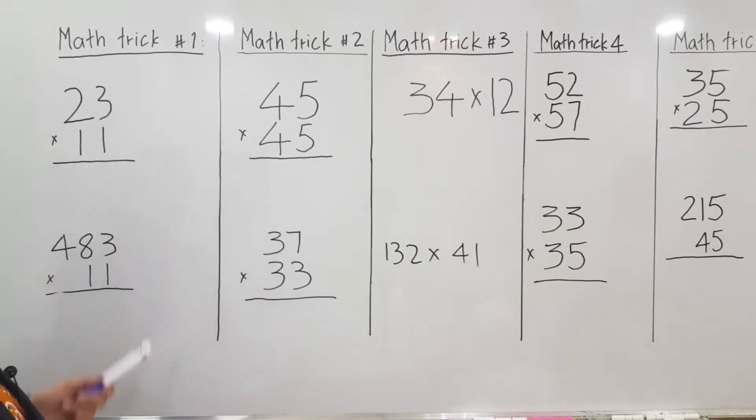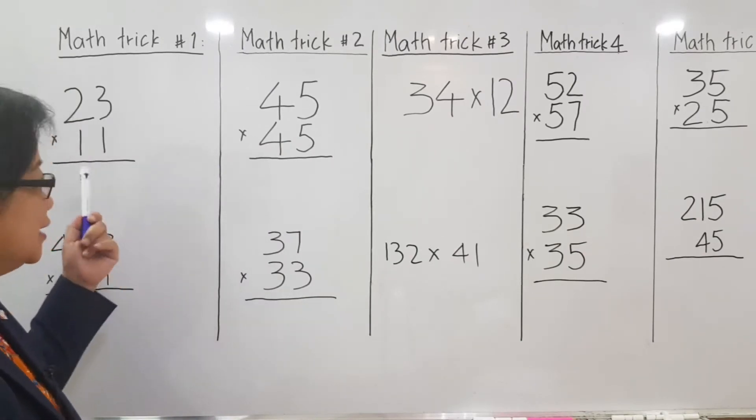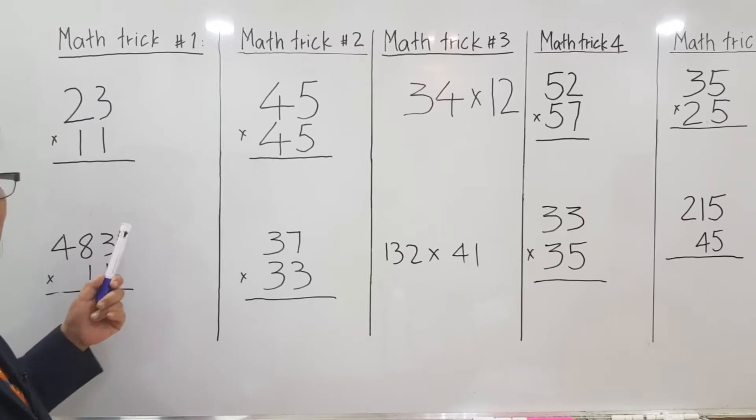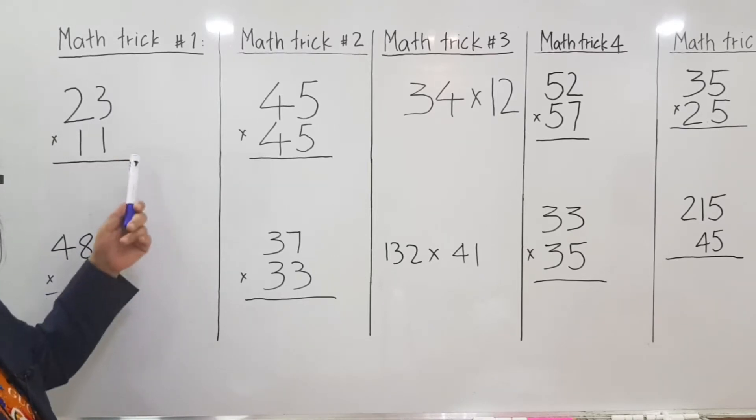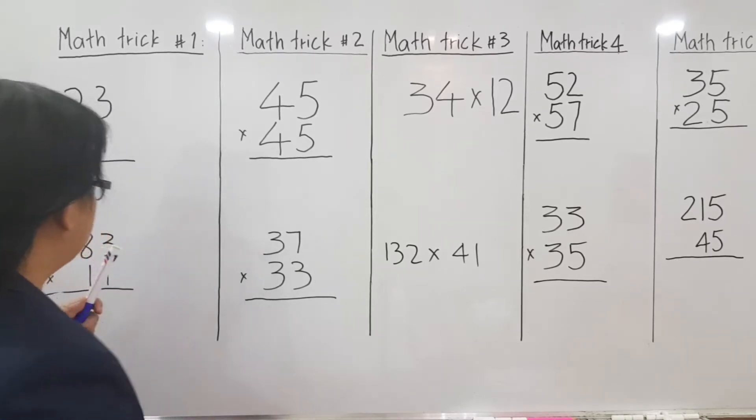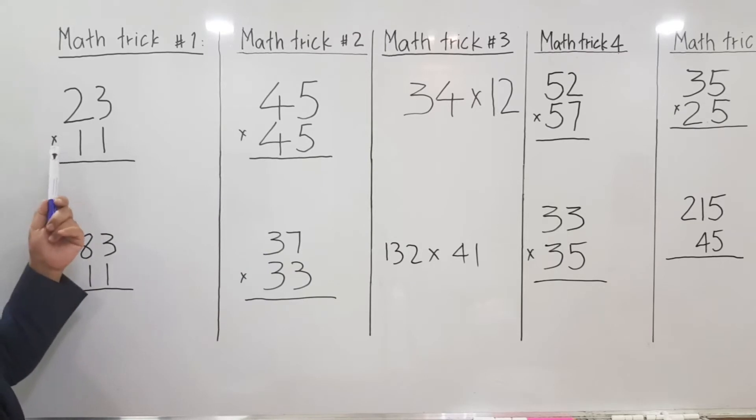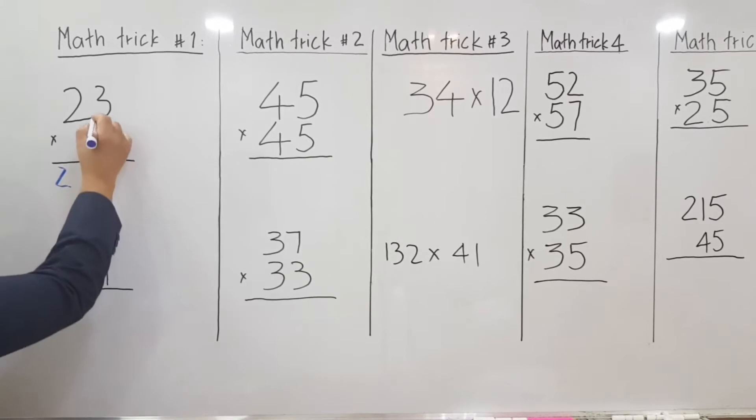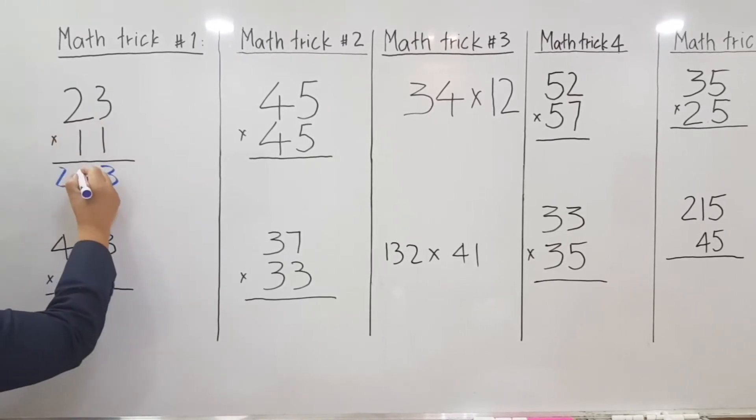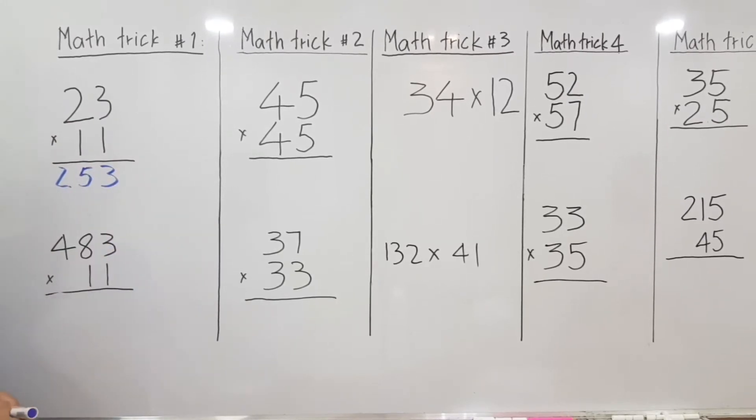This is matrix number 1. If you will see any numbers multiplied by 11, then this method is applicable. For example, we have 23 by 11. How will you solve this one? Just put down the 2, and then the 3, and then add these 2 numbers. 2 plus 3 is equal to 5. So the answer is 253.